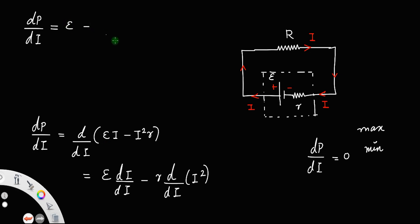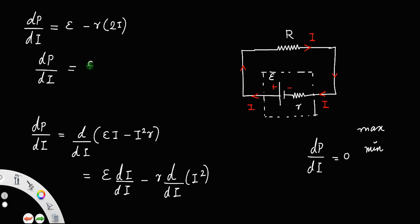Differentiating equation 3: the derivative of E with respect to I is E, and the derivative of I² is 2I, so dP/dI = E − 2Ir. Let us call that equation 4.